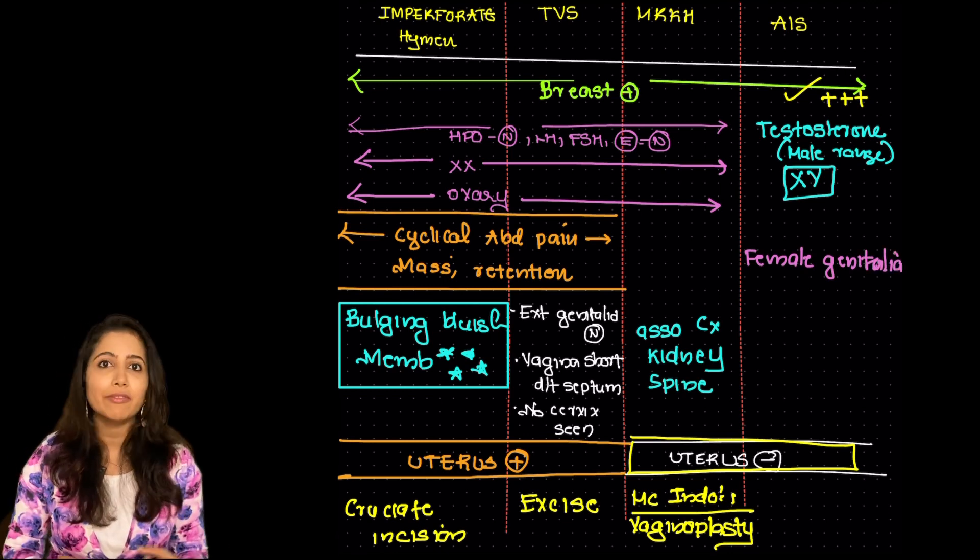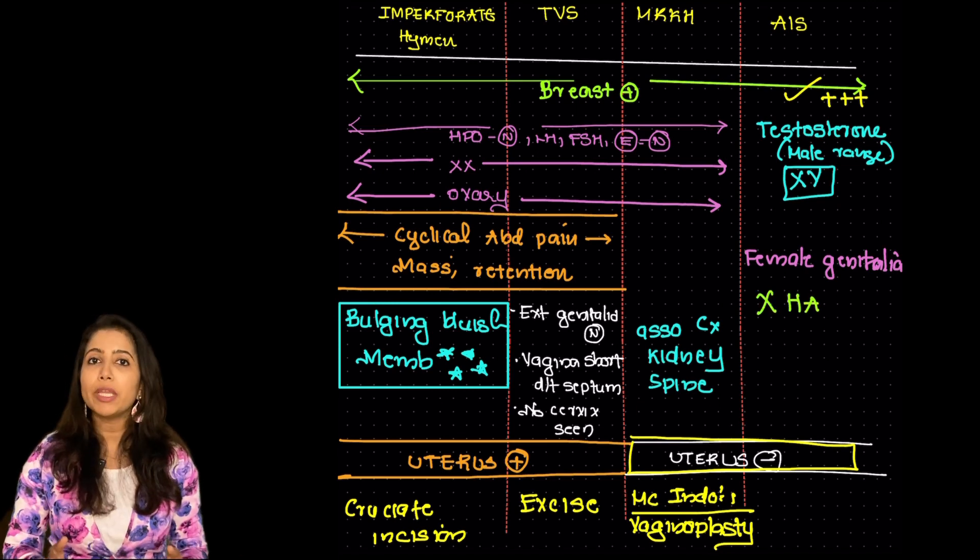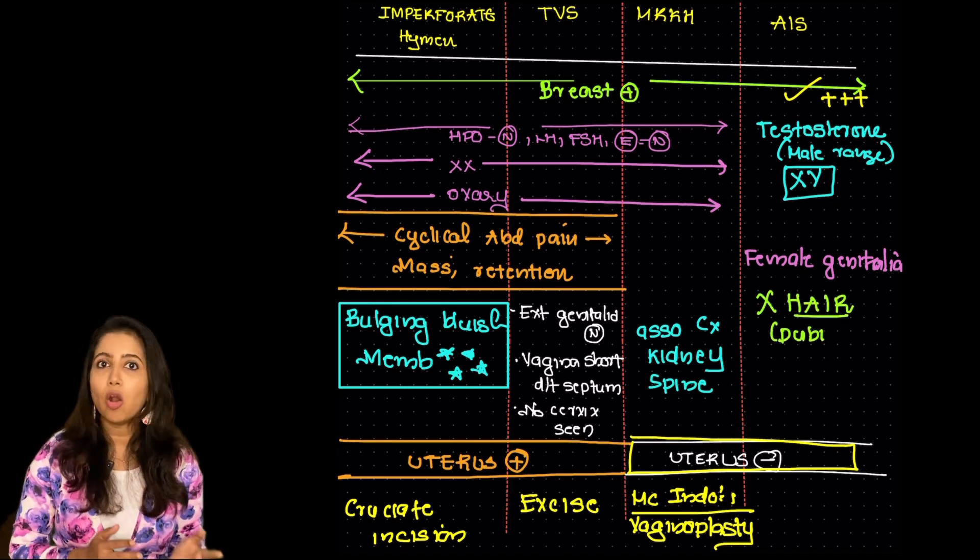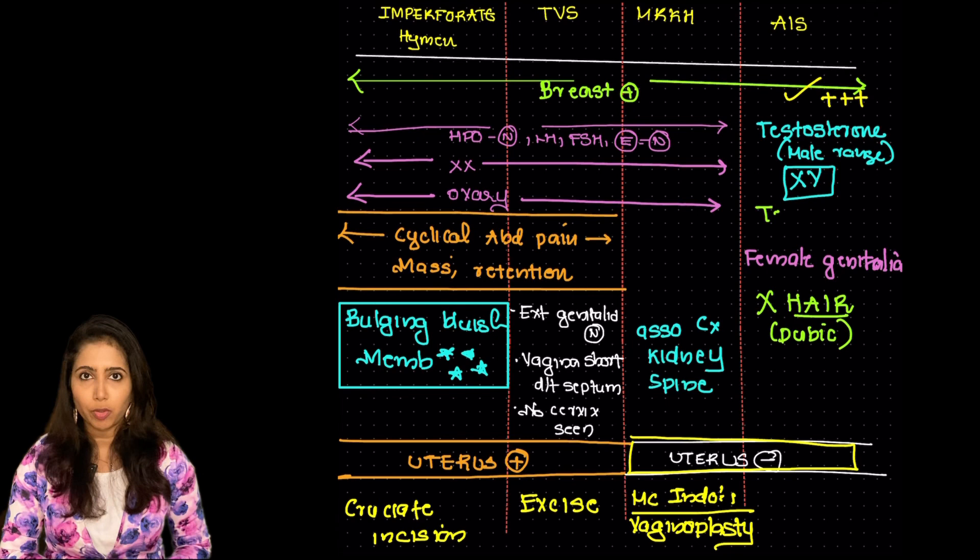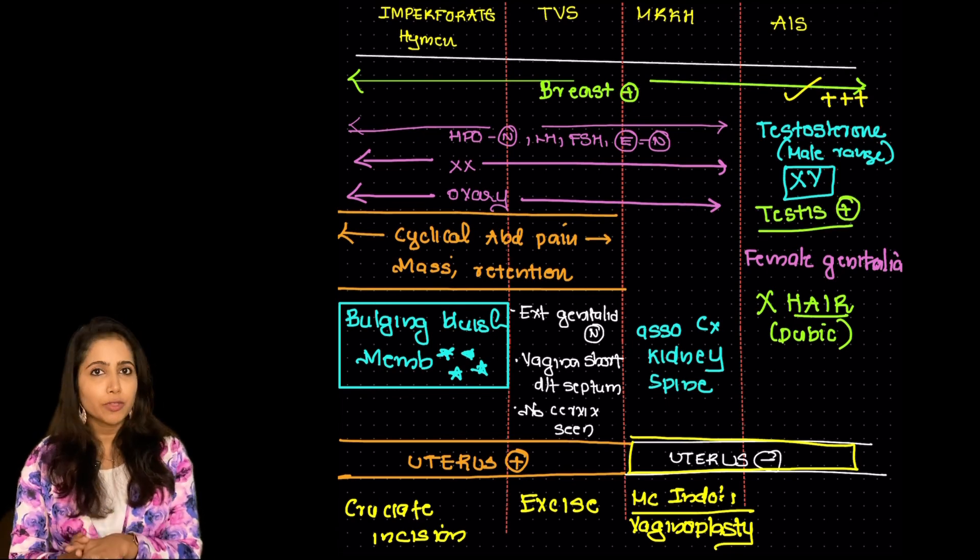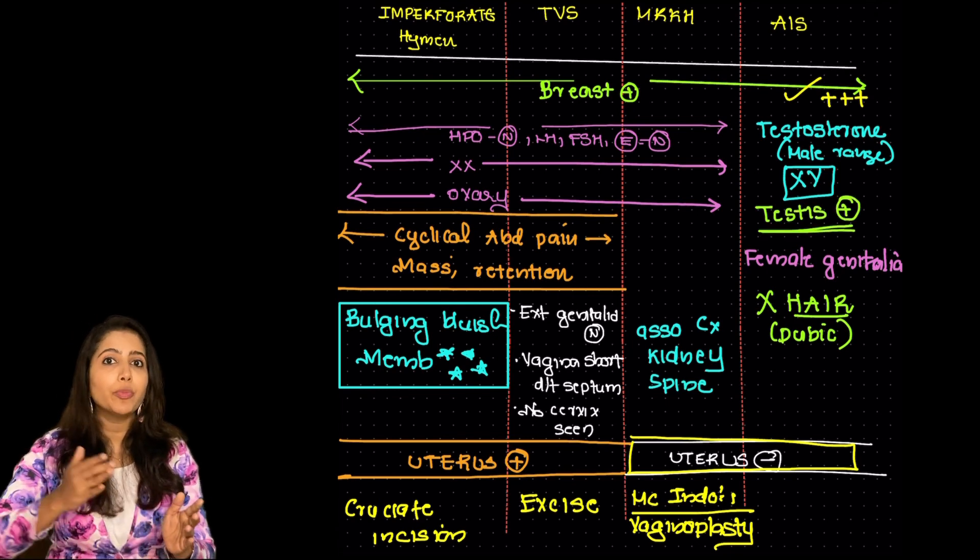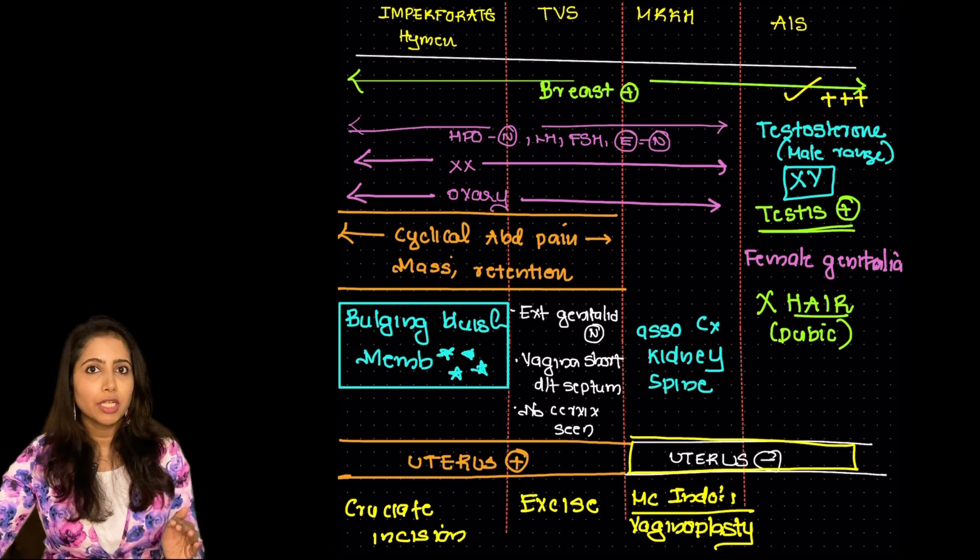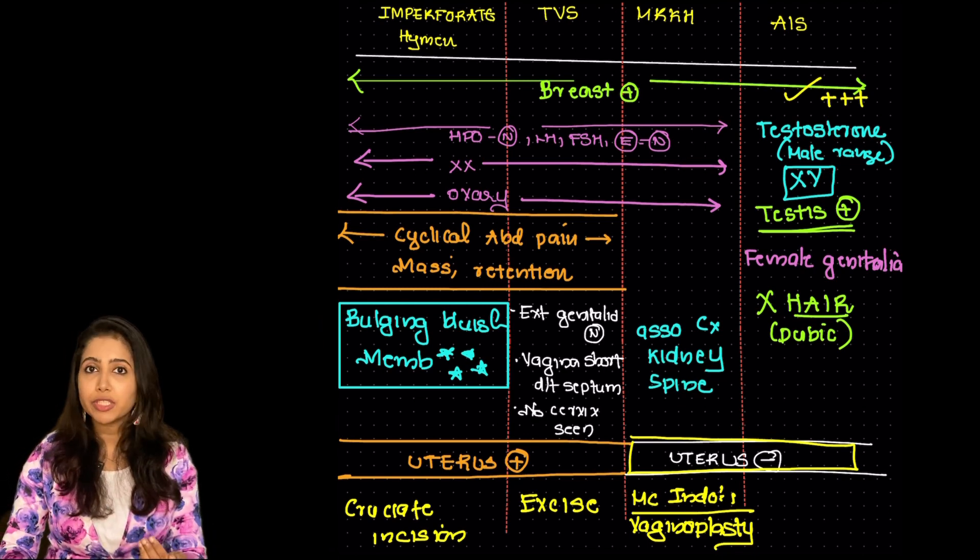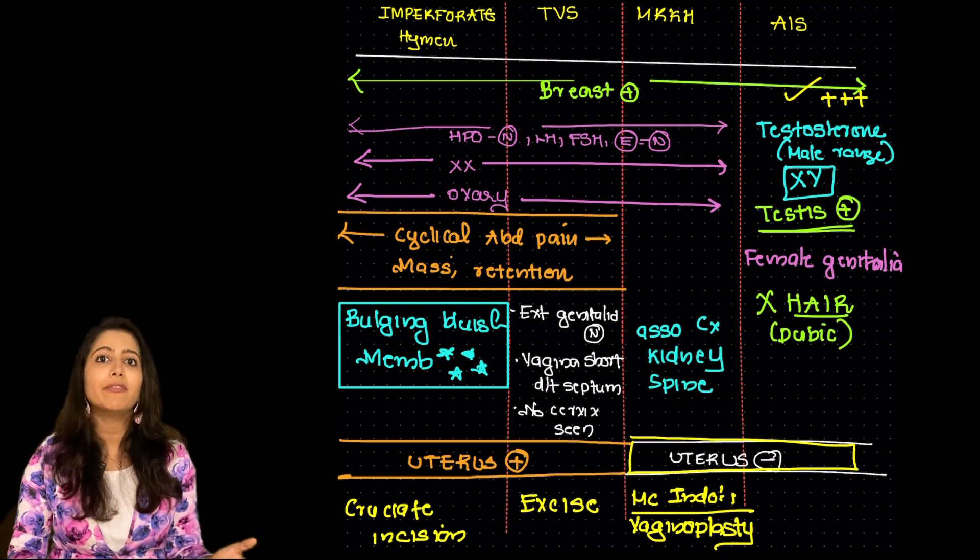Androgen is responsible for the development of hair. There won't be any hair growth in the axilla or groin. Very very important point. Apart from this the androgen is going to be converted into estrogen. So the high level of estrogen is going to cause very well developed breast.